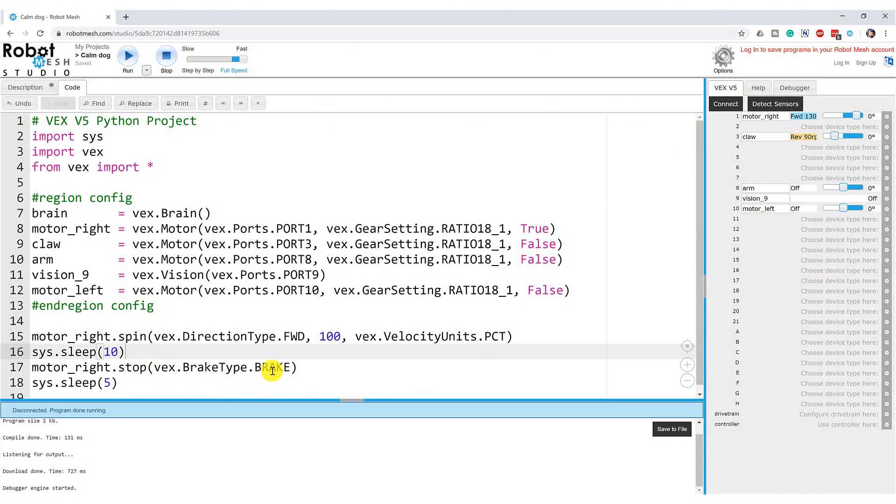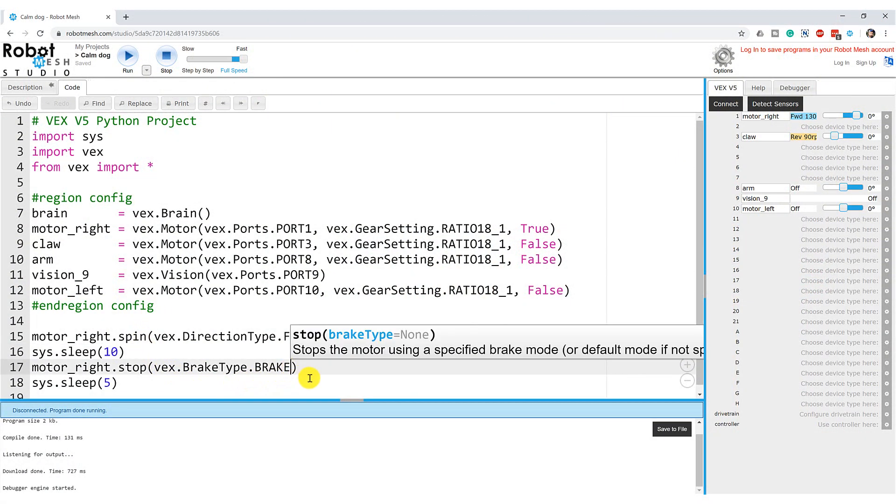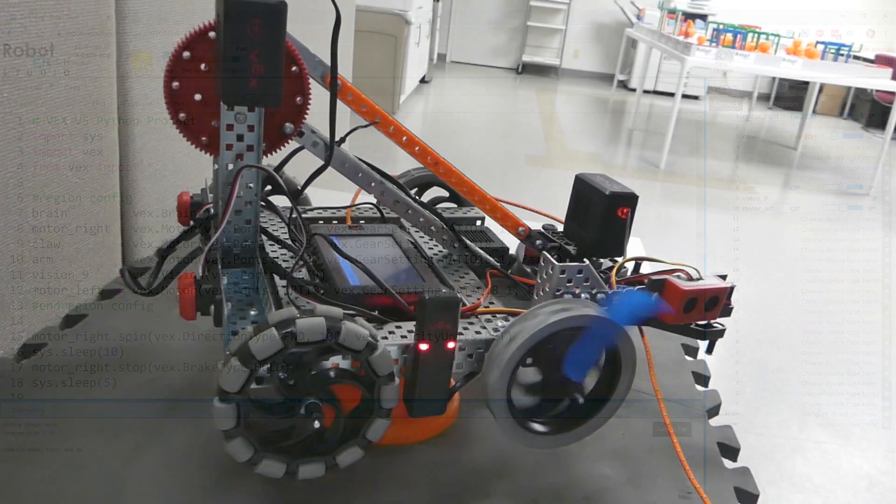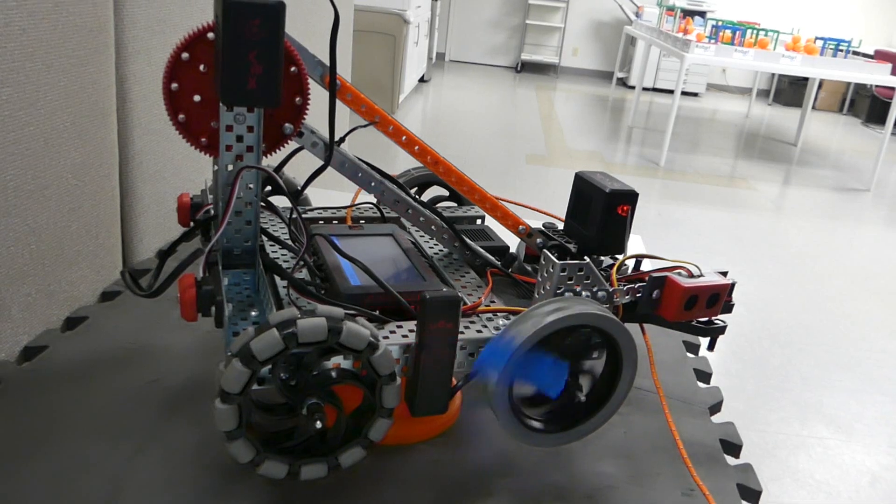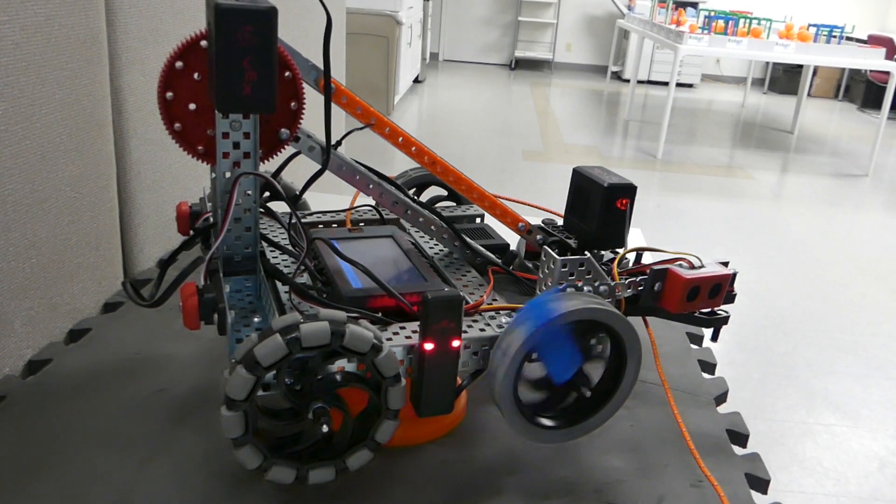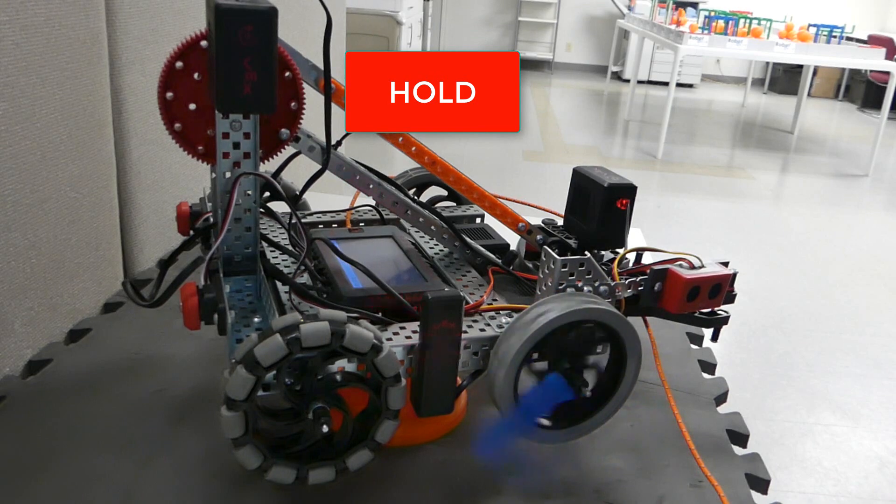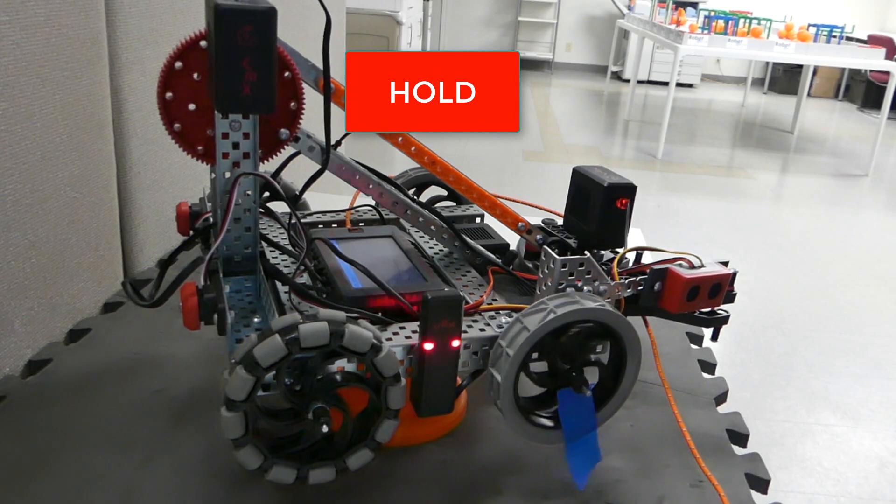Finally let's change this brake type or stop type rather to hold and see what happens. So this is the same command the motor is going to spin but this time we're going to try and hold the position for a couple of seconds afterwards. Take a look at the difference.